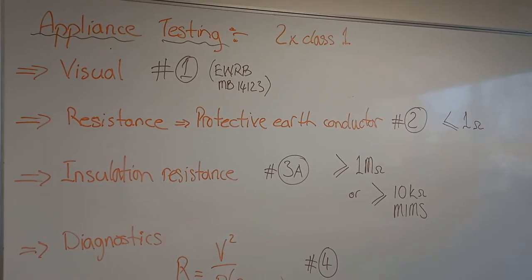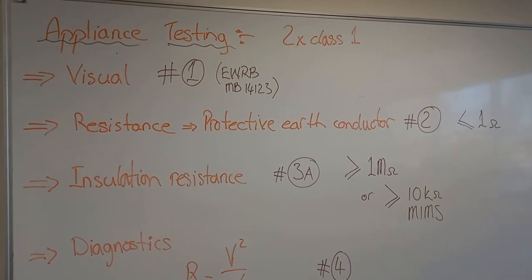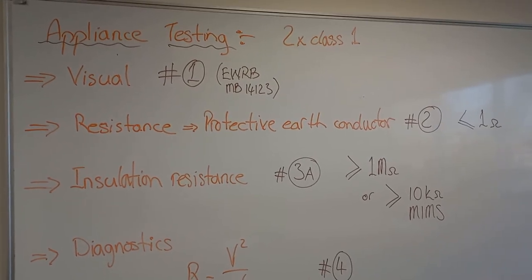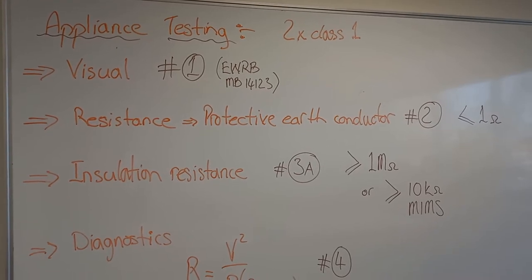Testing a Class 1 appliance. A Class 1 appliance is one that does not have the Class 2 double insulated square within a square symbol on its nameplate.